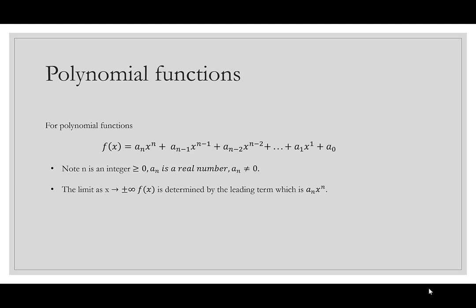A few things to note: n is an integer greater than or equal to zero. a_n is a real number, but the leading coefficient a_n can't be zero. Basically, a polynomial is a bunch of terms with powers, and those powers have coefficients.